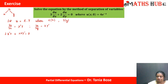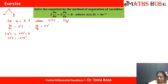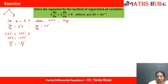As the name suggests — method of separation of variables — we separate the variables on both sides. So we get 3X'Y = -2XY'. Taking X terms to the left and Y terms to the right gives: 3X'/X = -2Y'/Y. Since both sides are ratios of functions of different variables, each side must equal a constant k.